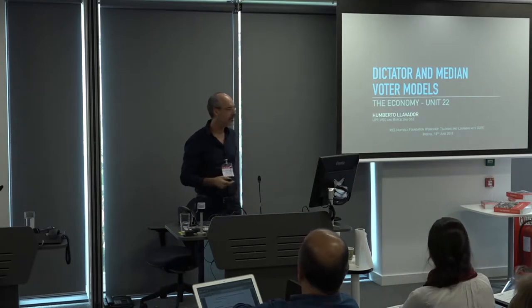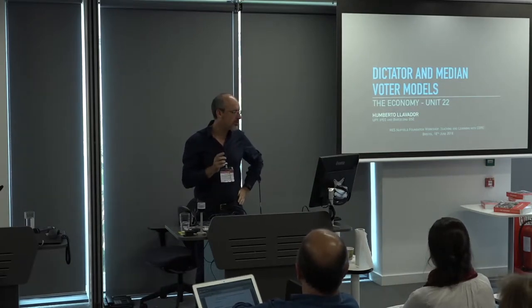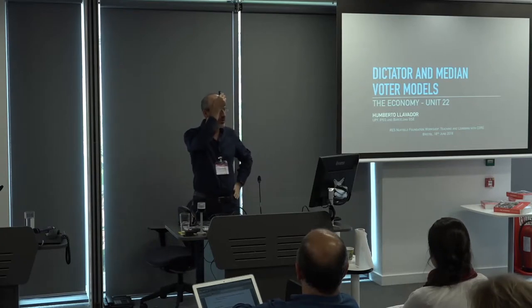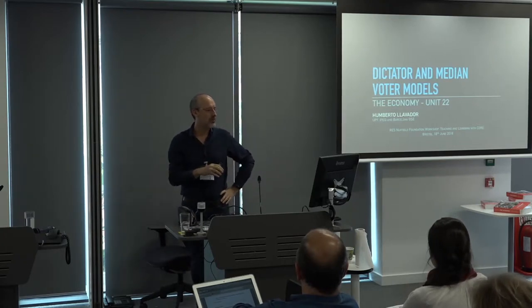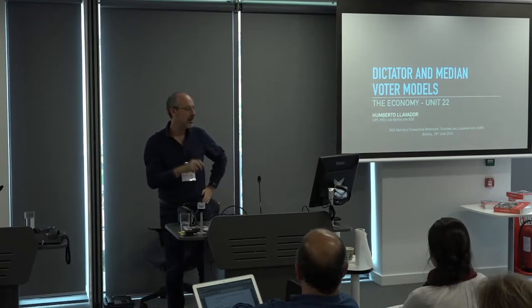So I'm back. What they asked me is to focus on Unit 22, to focus on the two models — the dictator model and the median voter model. The idea is that the political science view is a little bit missing in the presentation. I'm going to present these two models as the way they are presented in the textbook, and then I have to say some bad things. I'll try to excel on both ways.